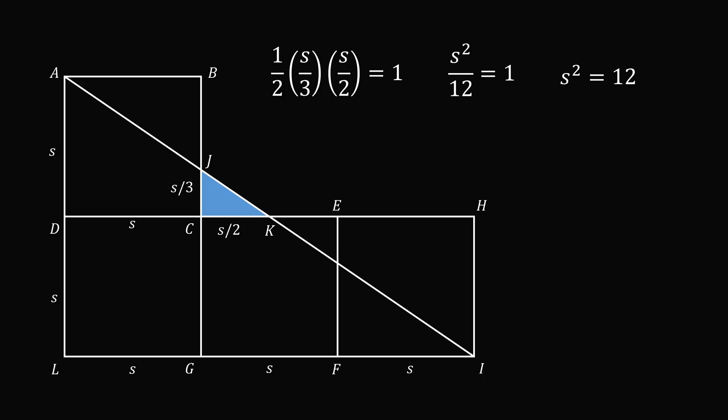But the area of the square is exactly equal to S squared. So the area of the square is equal to 12 square meters. And that's the answer.